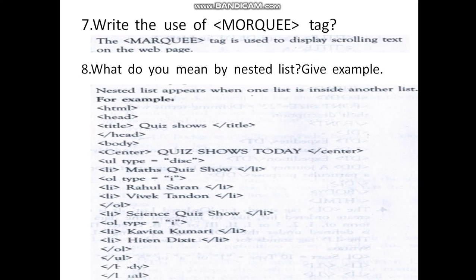Example given here — HTML coding. We are giving a quiz show as an unordered list with type disk. Inside that, an ordered list for Maths quiz show, with type small Roman numeral 'i', listing items: Rahul, Saran, and Vivek. Next, a Science quiz show as another ordered list with type small Roman numeral 'i', listing Kavitha, Kumari, and others. You are closing the list items and ordered list. Here you created the unordered list first, and within that you have given the ordered list — this was explained in class.